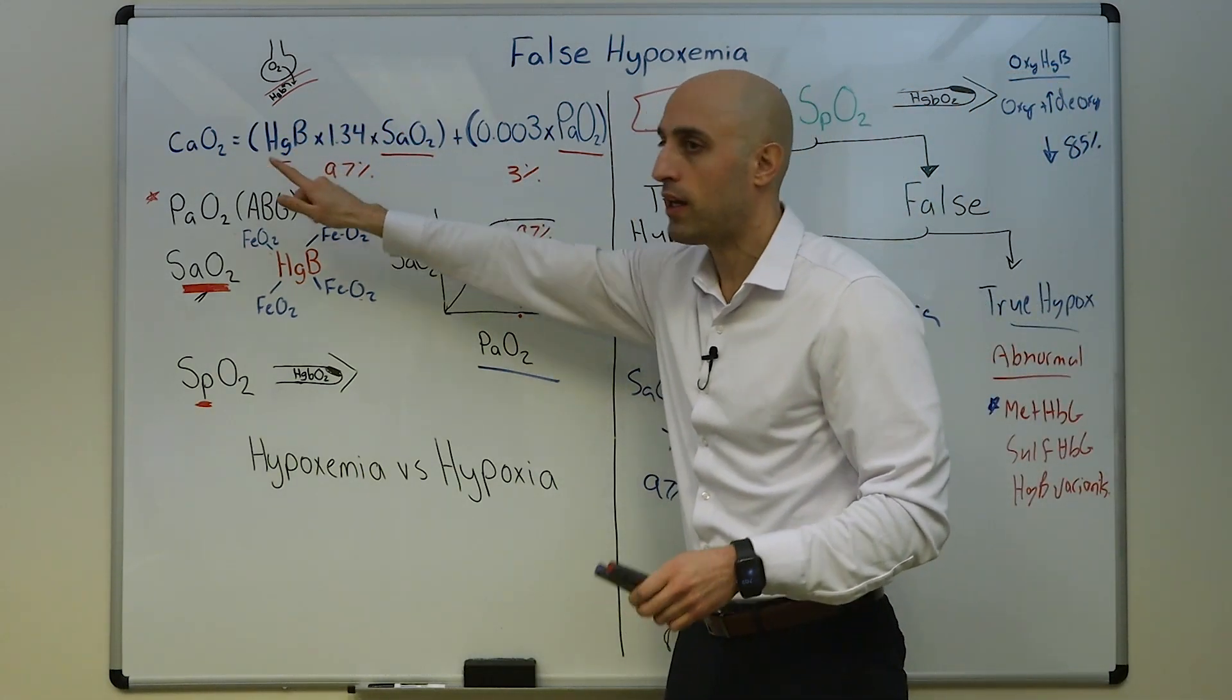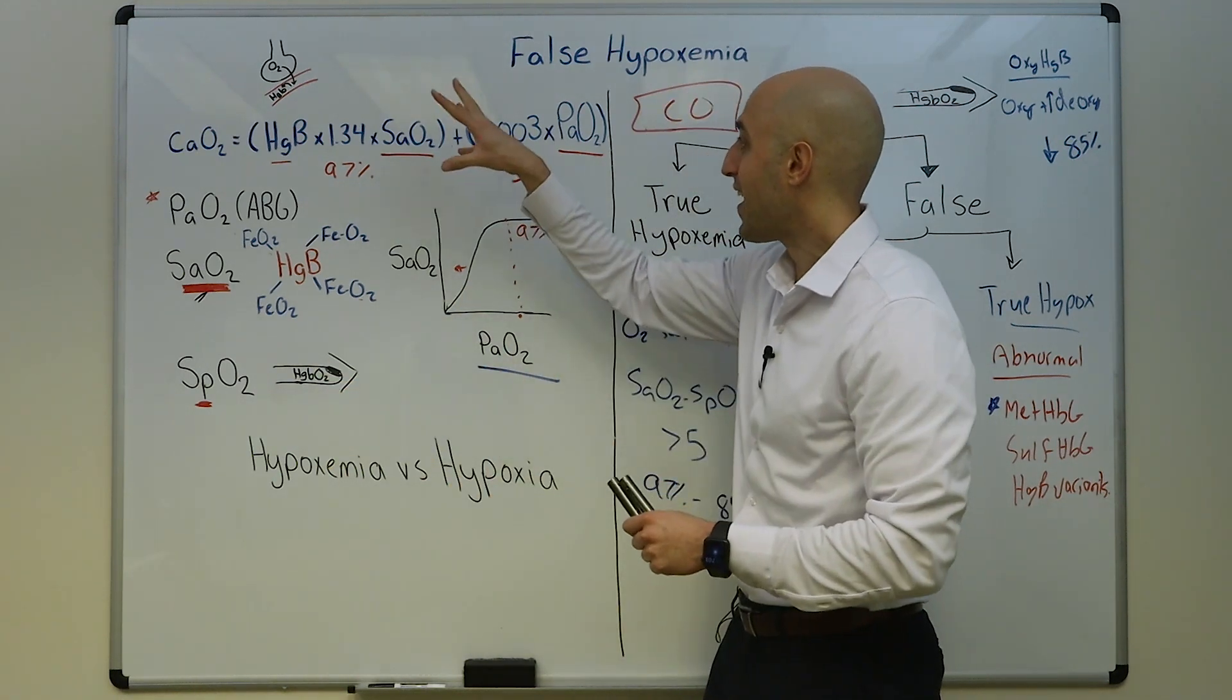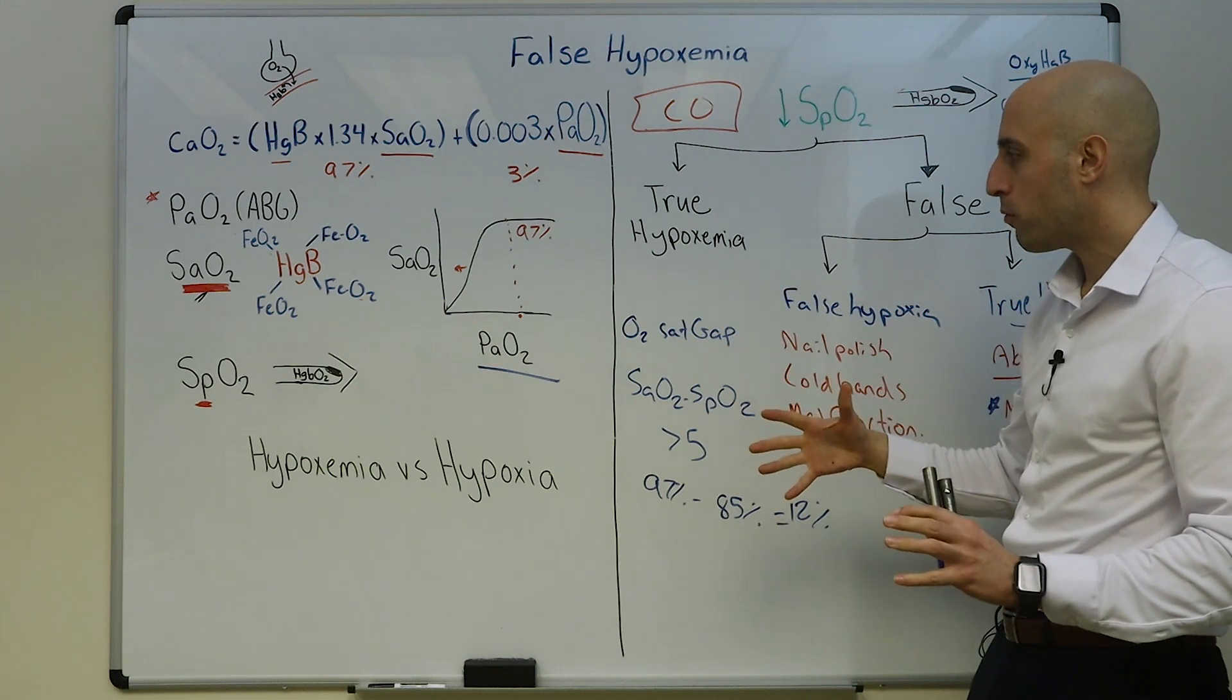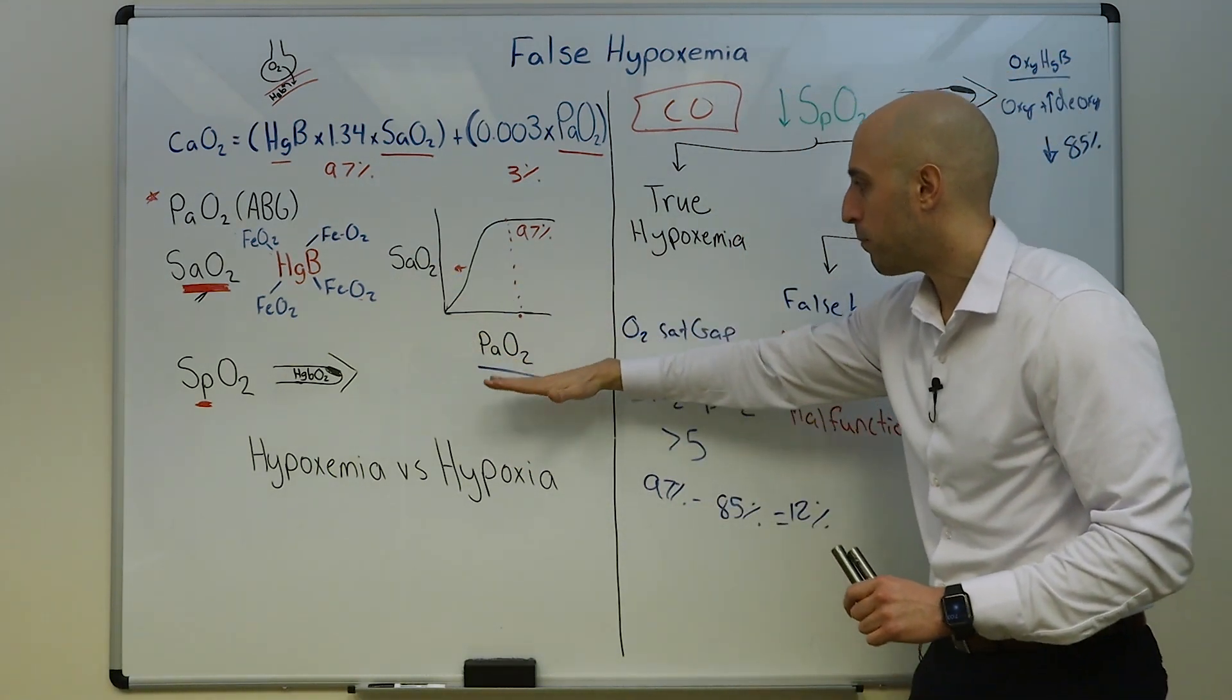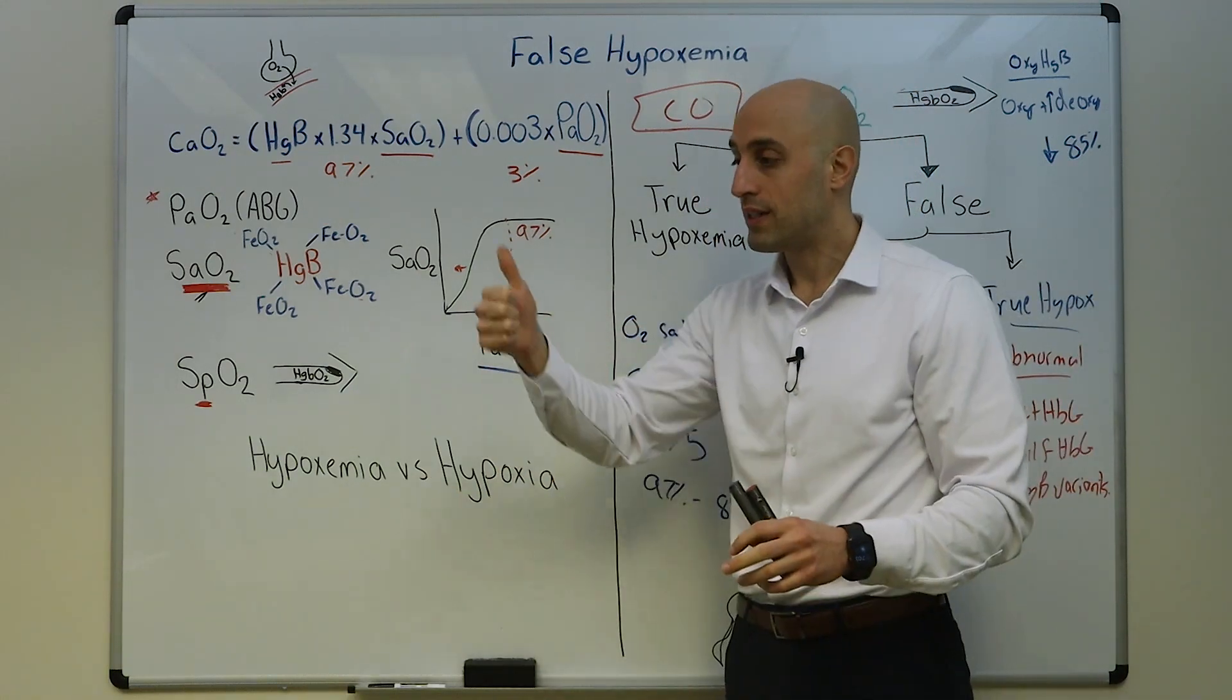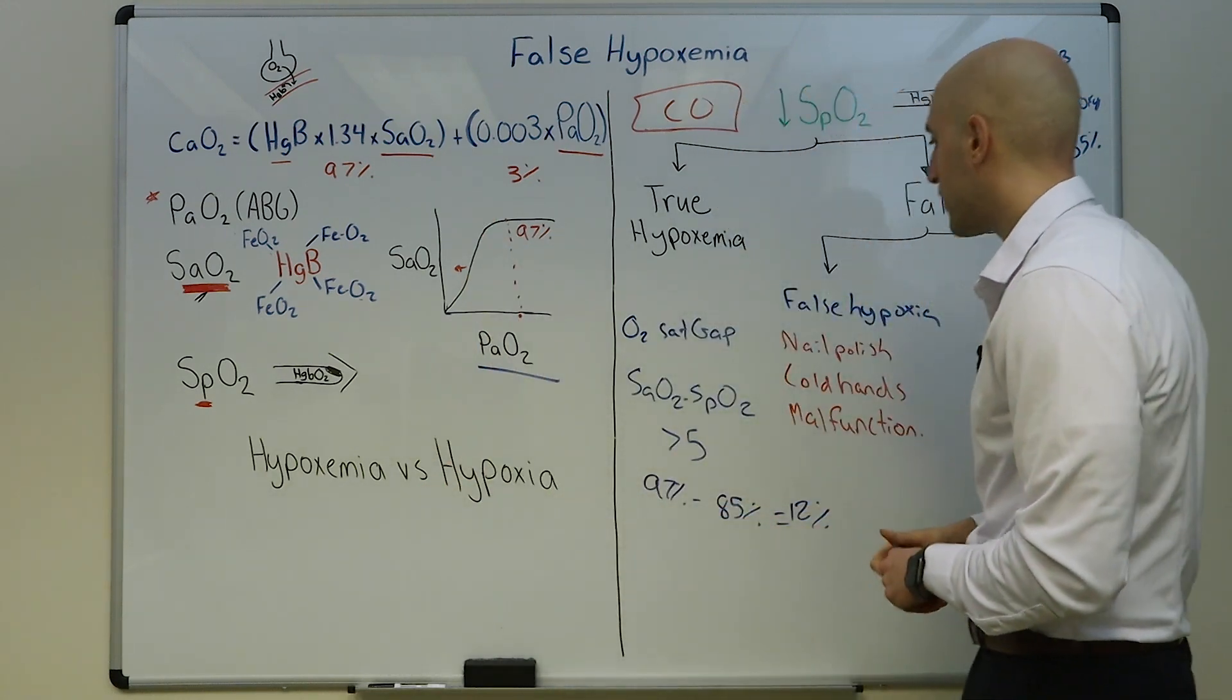The major determinant of the content of oxygen in the blood is the hemoglobin, both quantity and its ability to release oxygen, and the oxygen saturation of hemoglobin. On an arterial blood gas, the oxygen saturation is determined by the PaO2 and it's making assumptions which may not be true: temperature, pH, lack of methemoglobinemia, lack of carboxyhemoglobin.